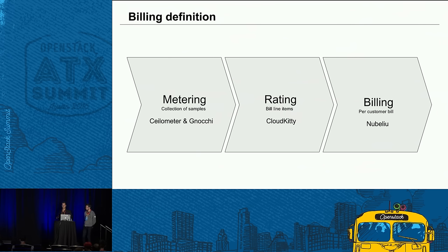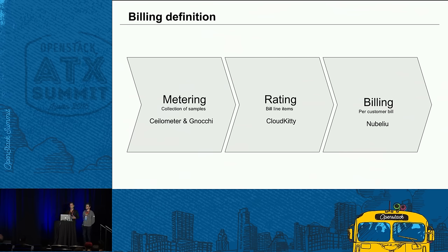We have three well-defined processes that take place in a billing system. We have the metering process, which is the process to get all the information from your cloud — information that you want to bill. As a result of that collection, you will get a collection of samples that you will store to be used later.